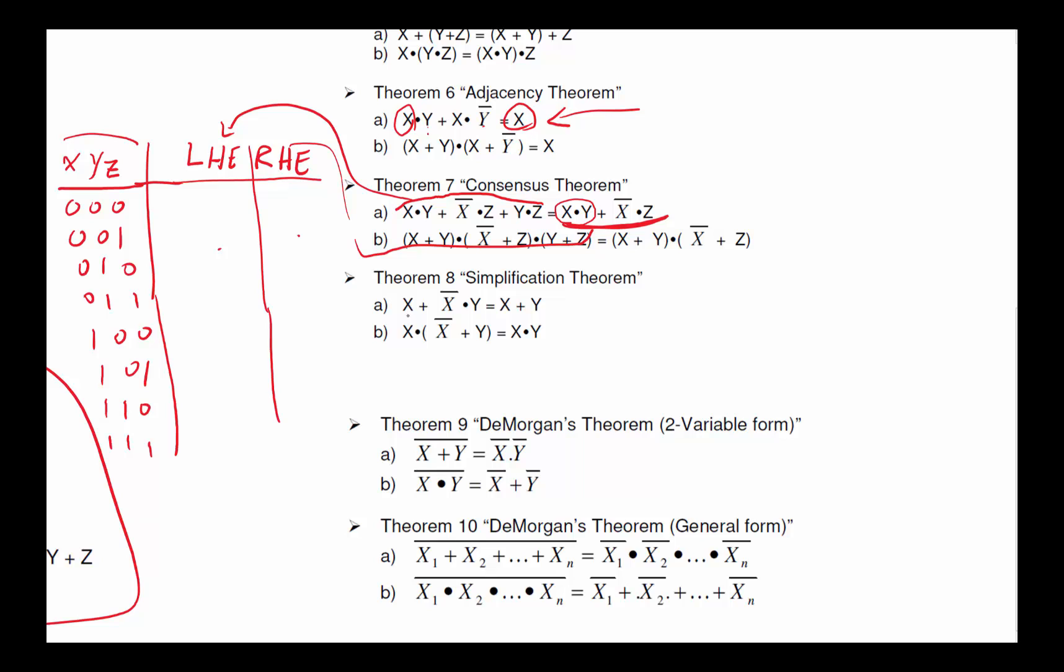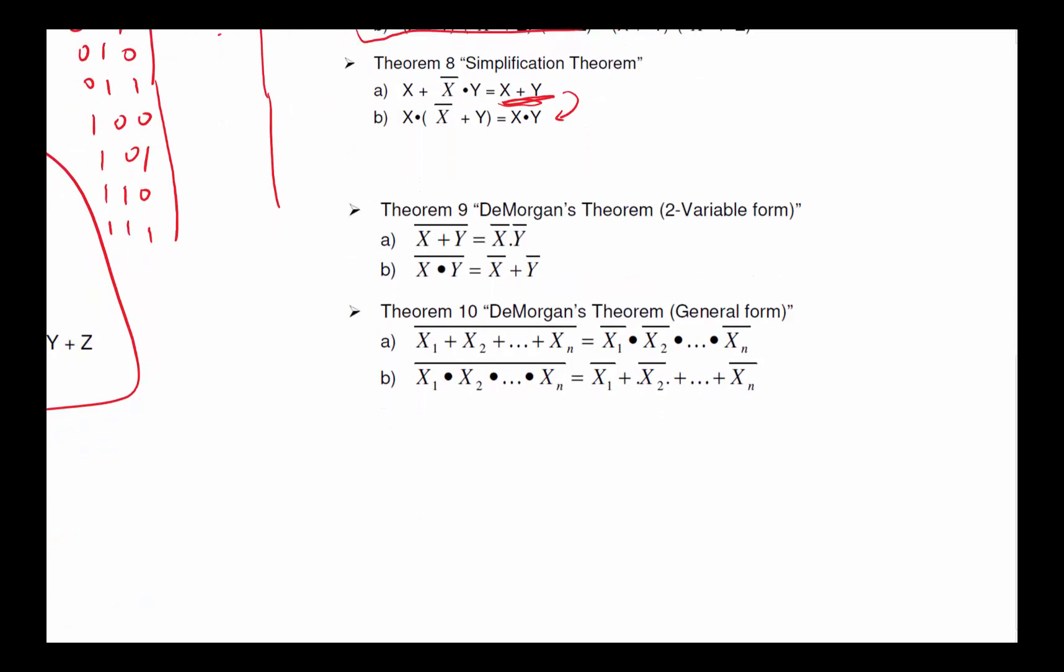That's the consensus theorem. Simplification theorem says if I've got an X ORed with (X' AND Y), that's kind of pretty obvious. Because it says if X is true, it doesn't matter what this is. If it's false, then it depends on what Y is. If X is one, so we can simplify to this. And of course it's dual is right here.